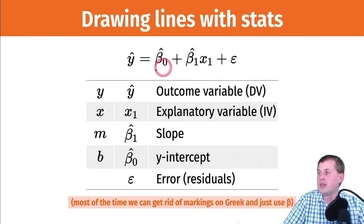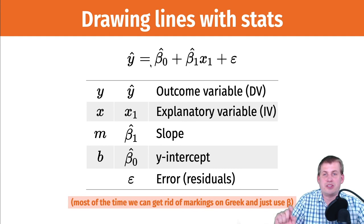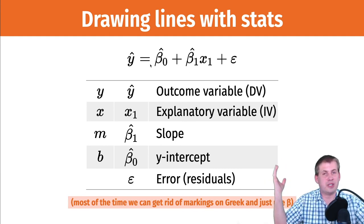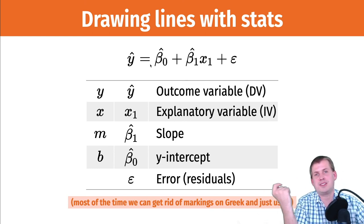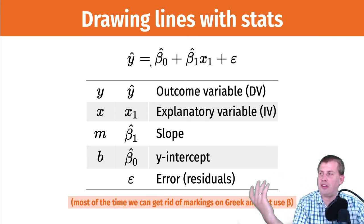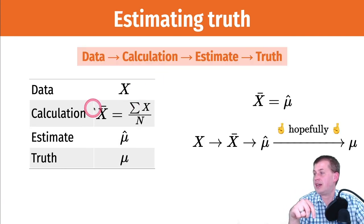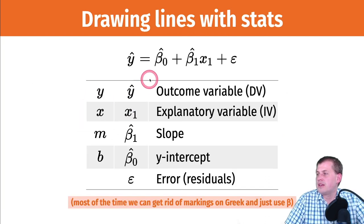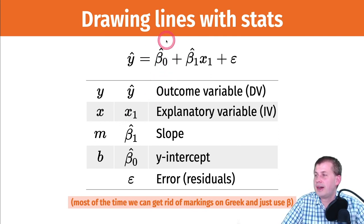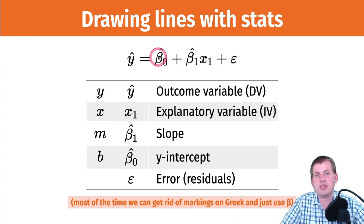By convention, when talking about averages we use bars, and when talking about regression output we use hats. What matters is that the hat signals this is a calculation — a Latin letter with a marking on it. The calculation uses beta-0-hat and beta-1-hat. Beta-0 is the y-intercept — that's the b in y = mx + b. Beta-1 is the slope — that's the m.